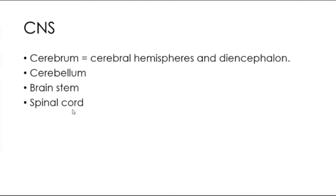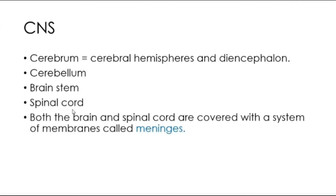Both the brain — meaning the cerebrum, cerebellum, and brain stem — and the spinal cord are enclosed in a system of membranes. These membranes are three in number and are called meninges.